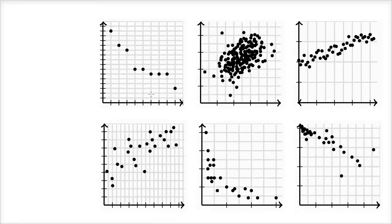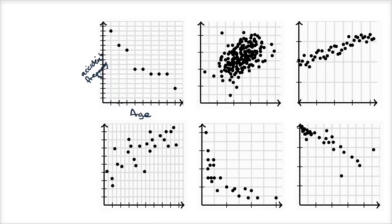What we have here is six different scatter plots that show the relationship between different variables. For example, in this one, the horizontal axis might have something like age, and the vertical axis could be accident frequency. These data points, maybe from a statistical survey, show that when the age is 20 years old, this is the accident frequency — a number of accidents per hundred — and data scientists or statisticians plotted all of these in this scatter plot.